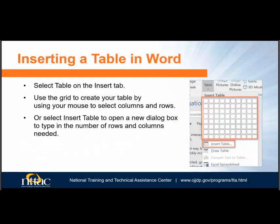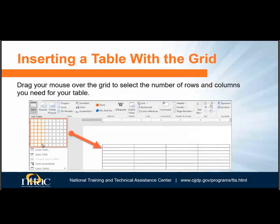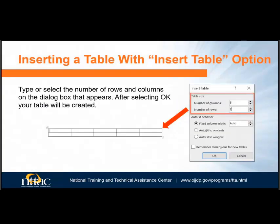On the Insert tab, select Table and either use the grid to create your table or use the Insert Table option and type or choose the number of rows and columns your table needs. To insert a table using the grid, drag your mouse over the grid to select the number of rows and columns you need. When you let go, your table will be created. If you'd rather use the Insert Table option, select Insert Table under the grid. A new dialog box will appear where you can type or use the selector arrow to select the number of rows and columns, then press OK.